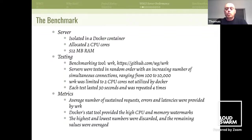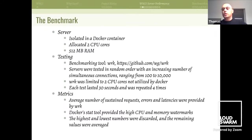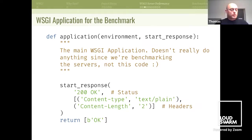The number of sustained requests, errors, and latencies were provided by wrk, and Docker stats provided the high CPU and memory watermarks. The highest and lowest numbers were discarded and the remaining values were averaged. The WSGI application used for the benchmark simply returns OK as bytes — and note the comment saying it doesn't really do anything since we're benchmarking the server, not this code — and we're going to discuss that in a bit.